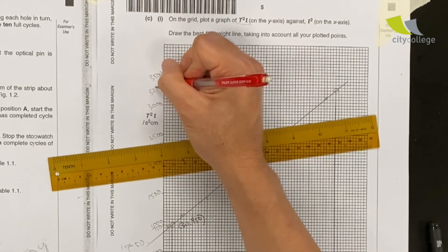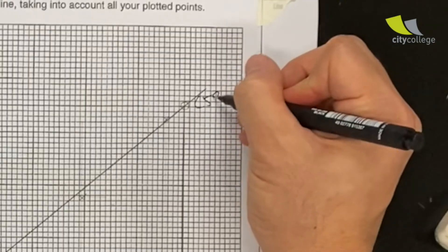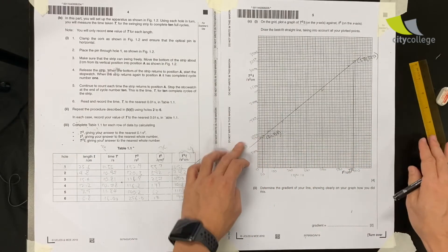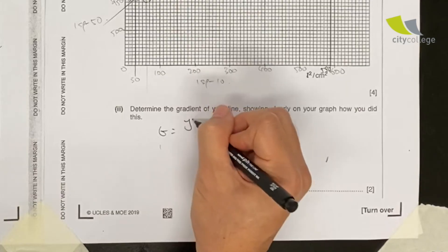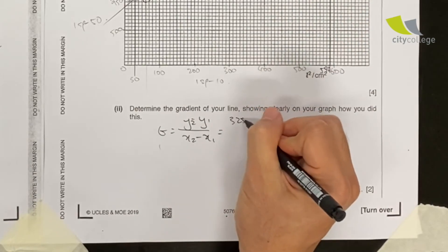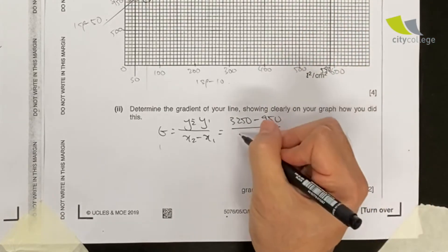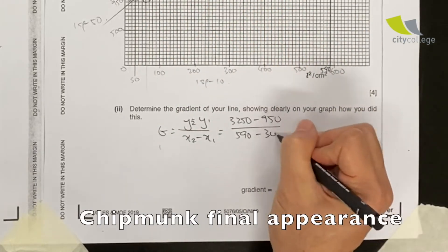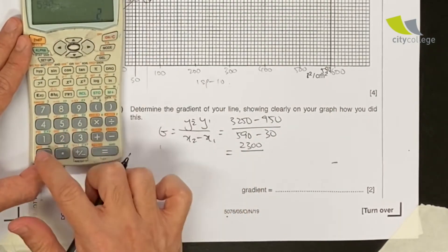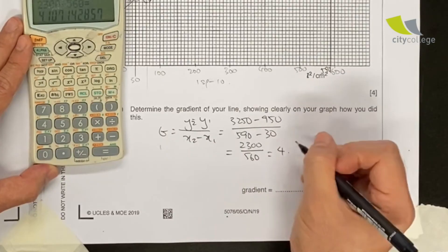Okay, so now I can calculate my gradient. So gradient g equals to (y₂ - y₁) over (x₂ - x₁). So y₂ is 3250, y₁ is 950, divided by 590 minus 30. Here's my calculator: 3250 minus 950—actually I don't need a calculator for this. 2300 divided by 560, you get 4.11. So gradient: 4.11.